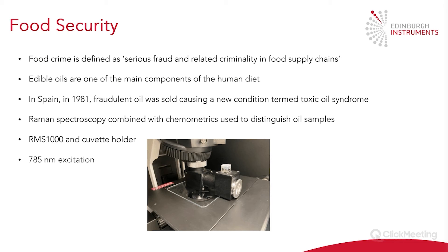The first example I want to discuss is food security, specifically edible oils. Oils such as olive oil, extra virgin olive oil, and vegetable oil are obviously one of the main components in our diet. A common issue is the adulteration of extra virgin olive oil with a cheaper oil, which has both commercial and health implications. In Spain in 1981, fraudulent oil was sold causing a new condition termed toxic oil syndrome. In the first few months, over 20,000 people were affected and 300 people died. It was later determined to be caused by contaminated rapeseed oil intended for industrial use being sold as olive oil.